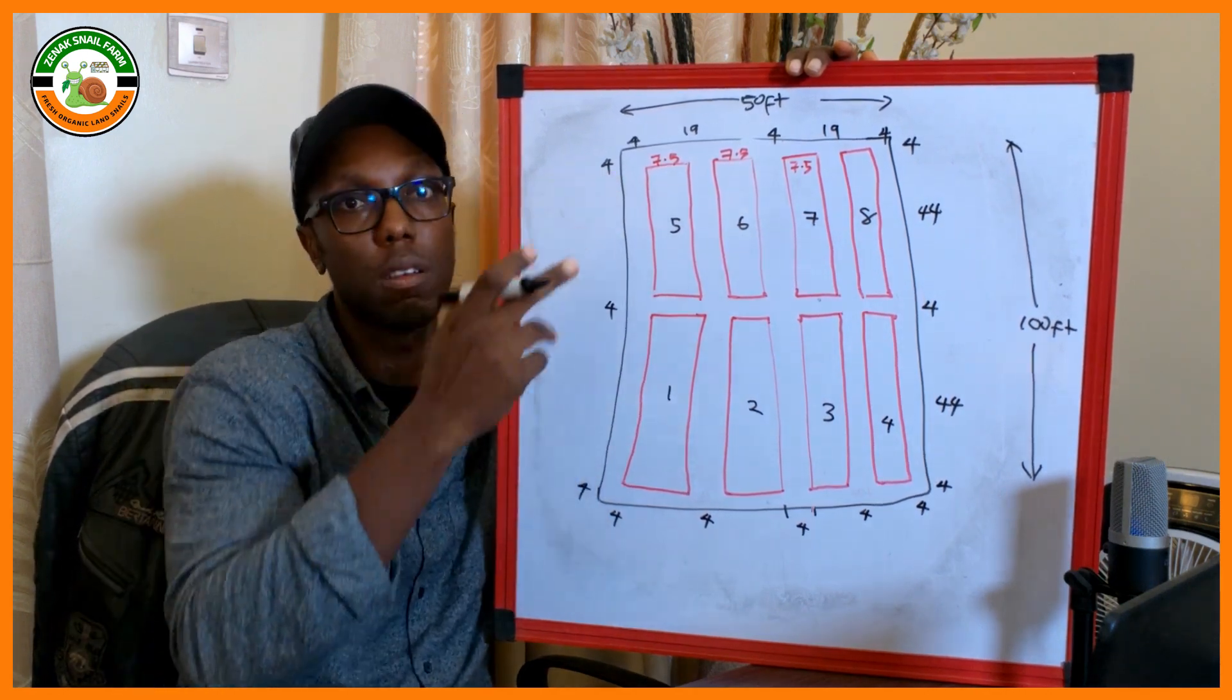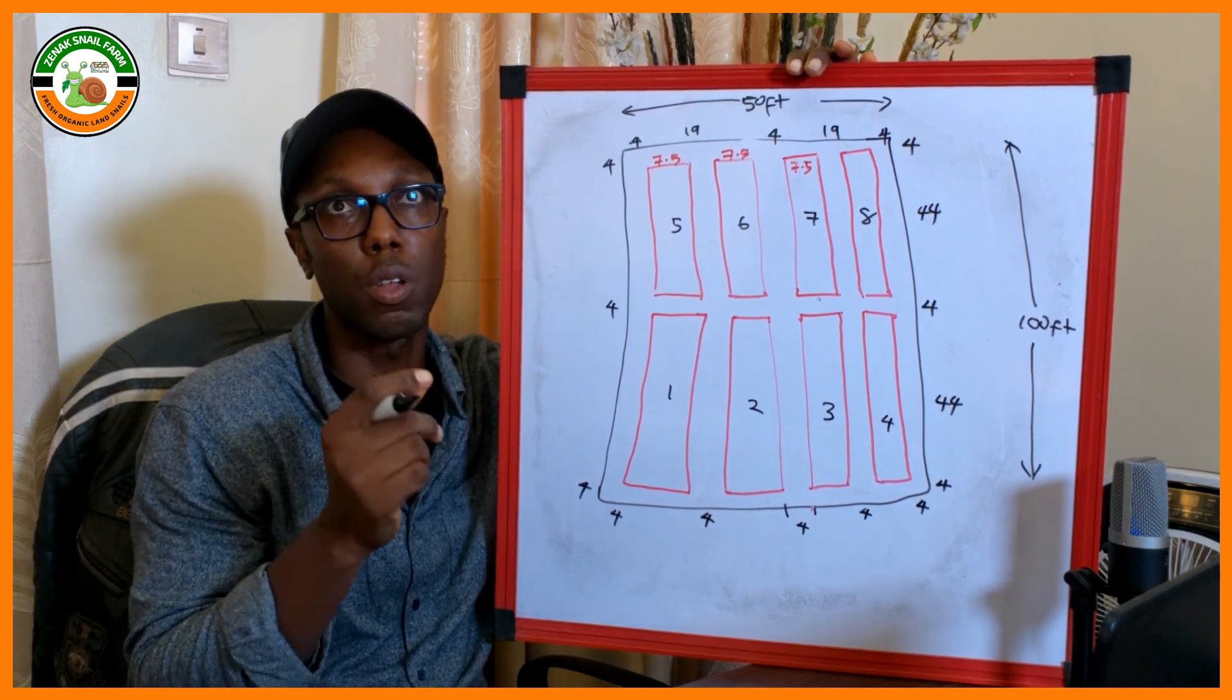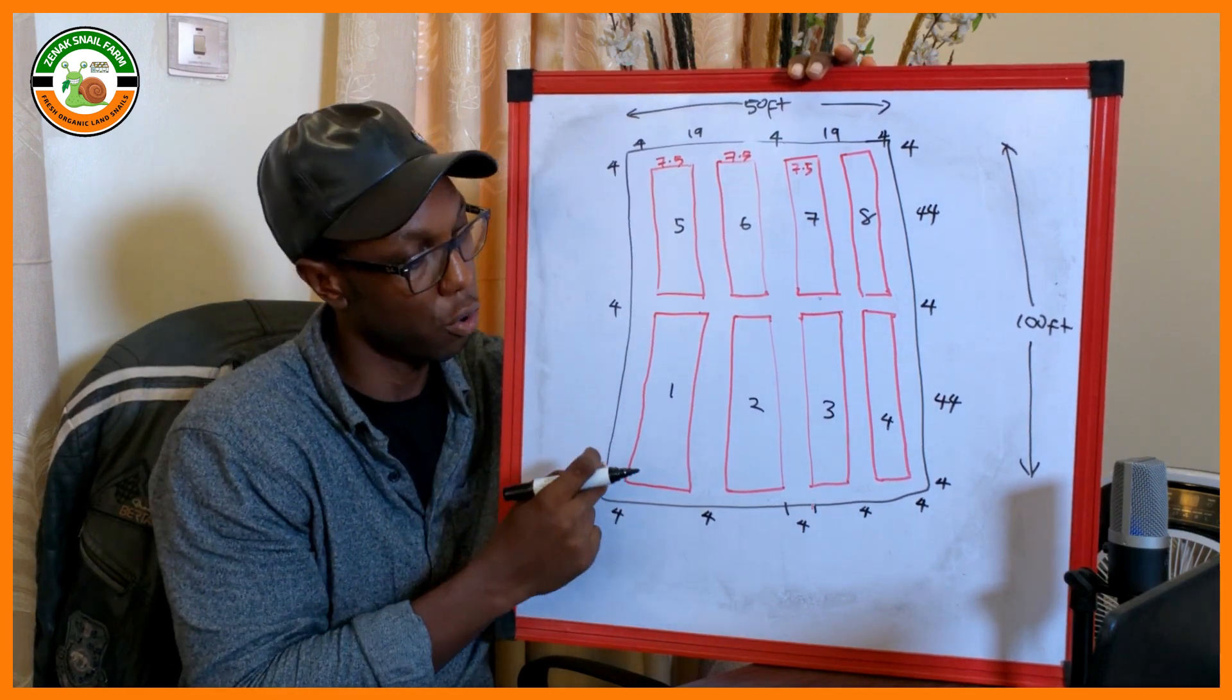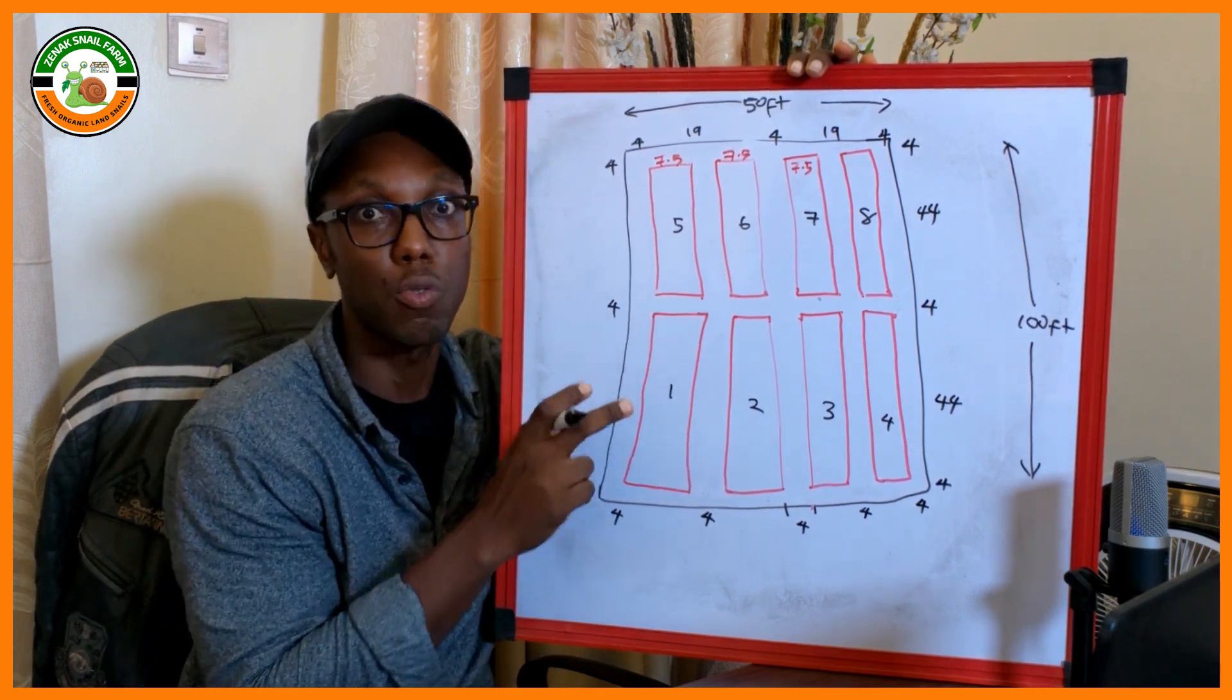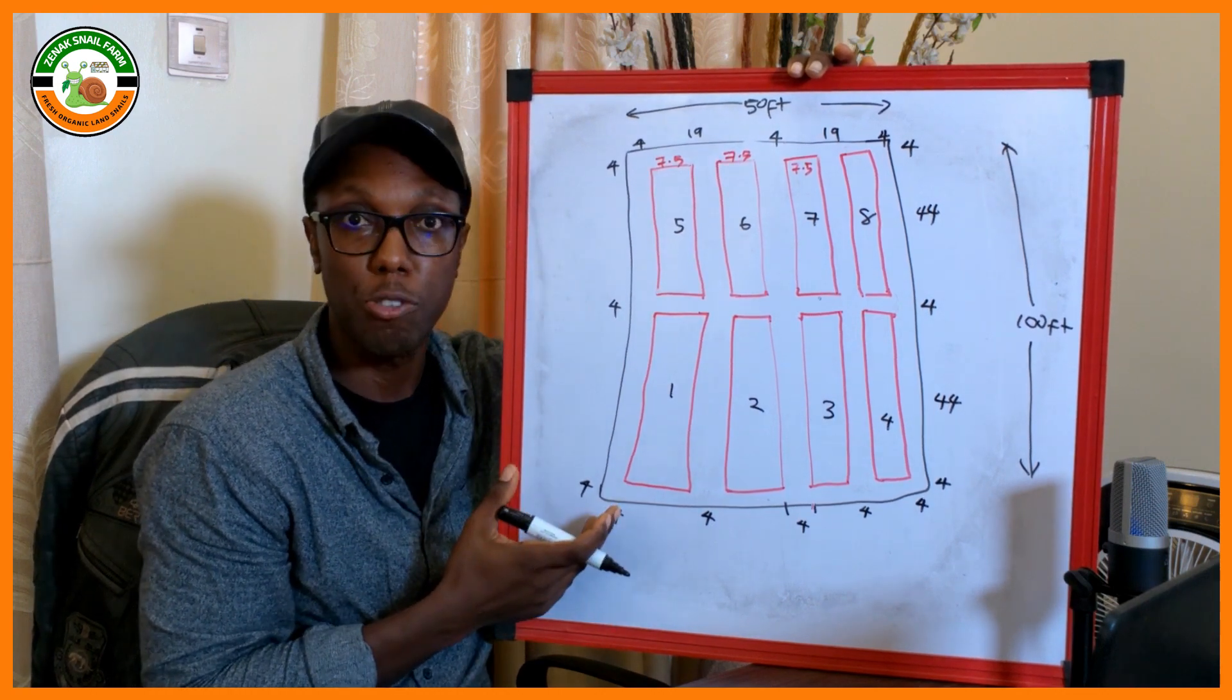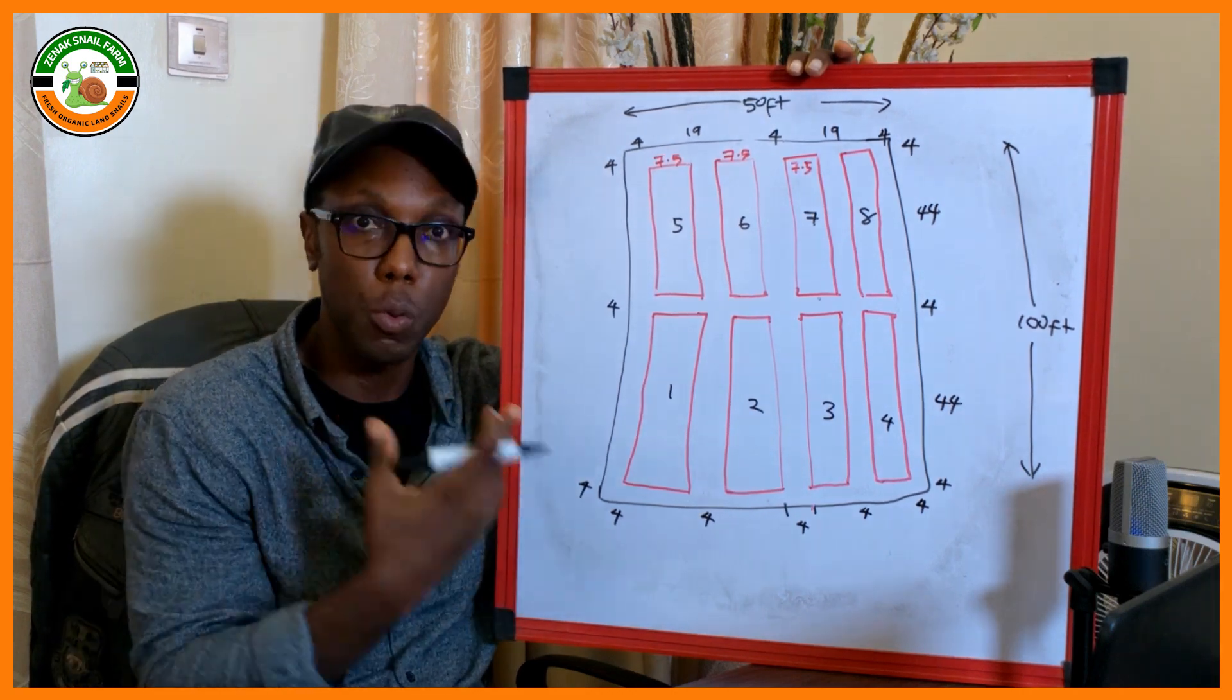In part 2 of this video, we will calculate how to know the quantity of galvanized iron pipes you need to construct the roofing frame of this greenhouse, and also the ideal height I used for my own greenhouse. I hope you found this information useful. If you did, please kindly like, share, and most importantly, subscribe to let me know I'm doing the right thing.